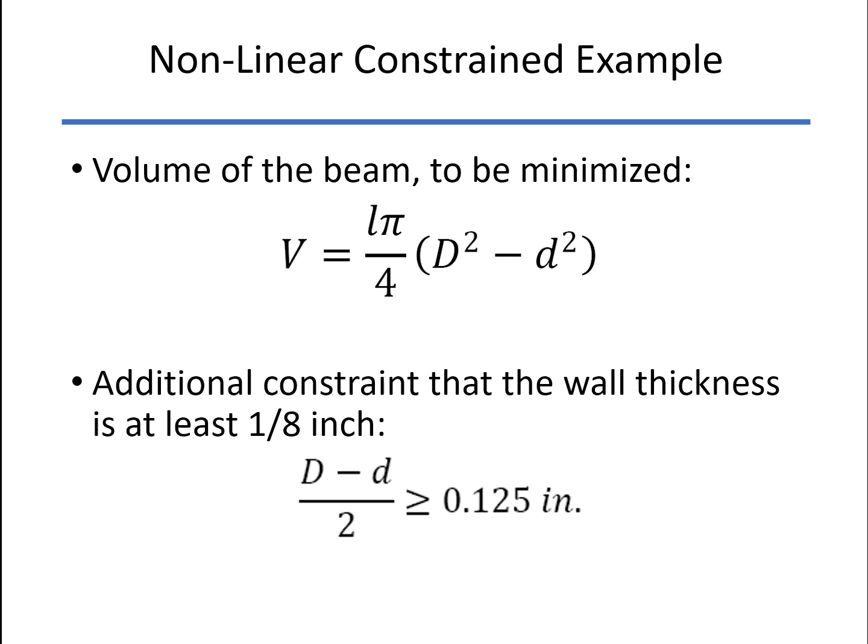We don't want it to be such that the outer diameter is huge, and yet our thickness is thousandths of an inch or so, so you could dent it very easily. So we want to make sure that the wall thickness is at least an eighth of an inch.